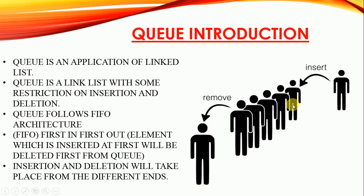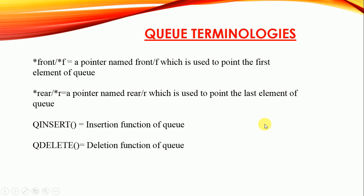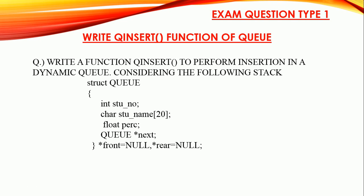So insertion will be done from the end and deletion from the front — insertion and deletion take place from different ends of the queue. Some terms: the Front or F pointer points to the first element of the queue; the Rear or R pointer points to the last element. The insertion function is named QInsert and the deletion function is named QDelete.